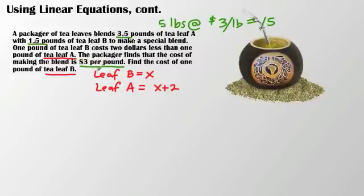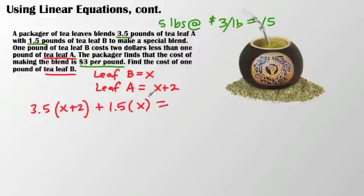I have 3.5 tea leaf A, which costs x plus 2, because I don't exactly know the cost, plus 1.5 pounds of leaf B. That's really what I'm looking for. And when I combine those two together, I get a total of $15.